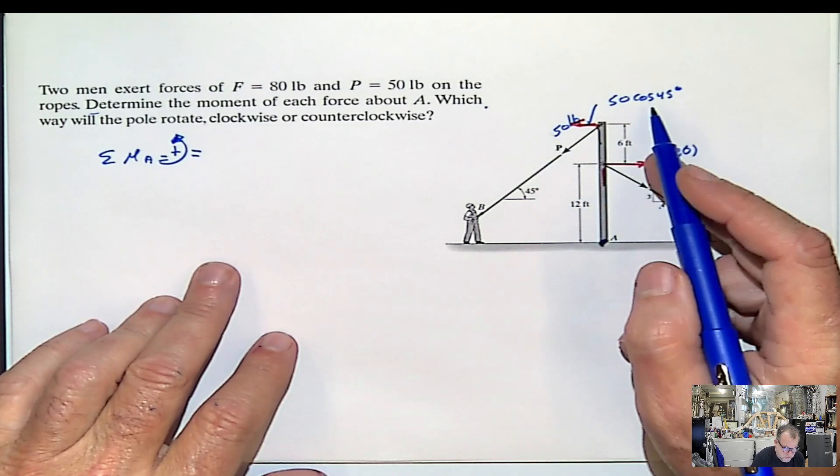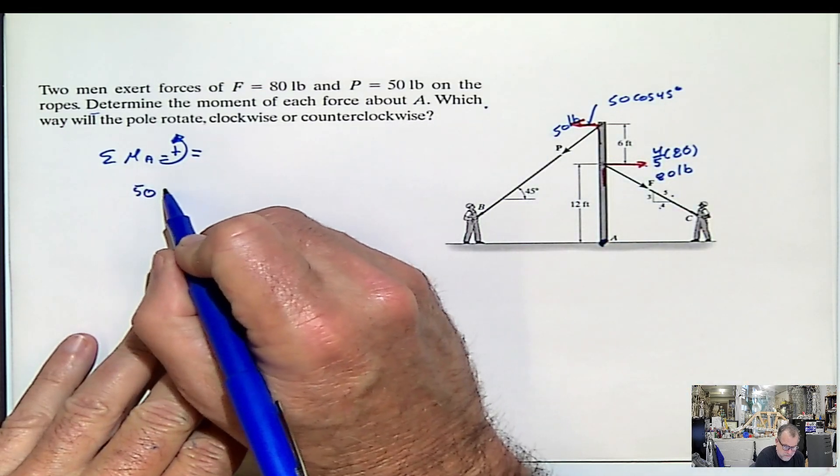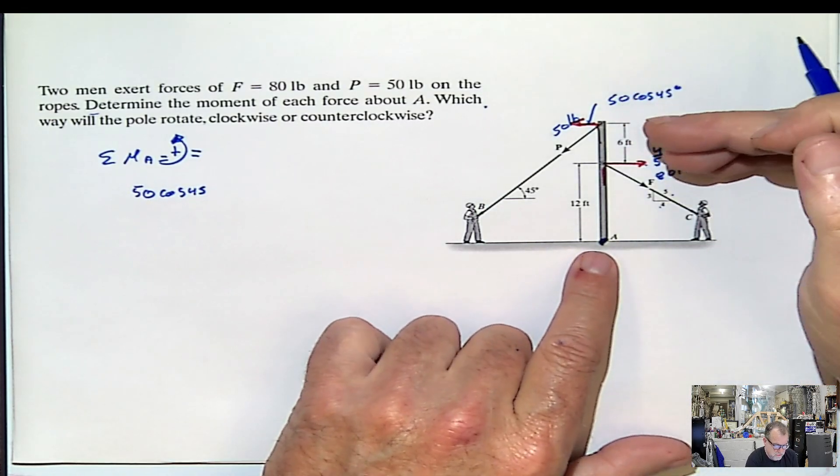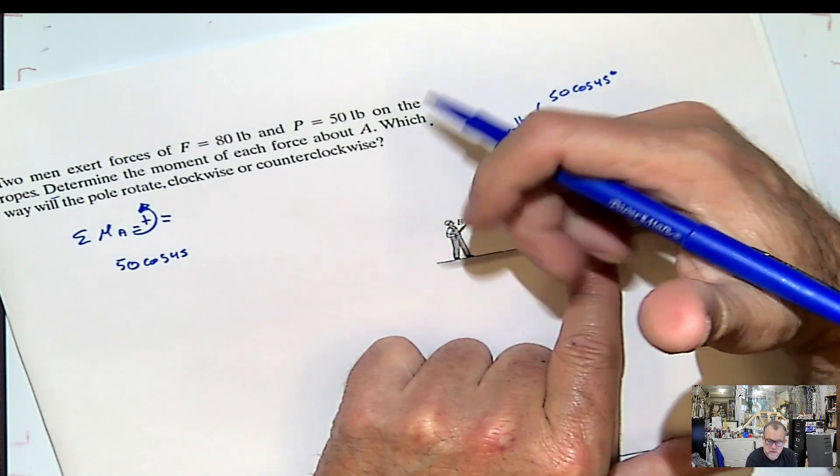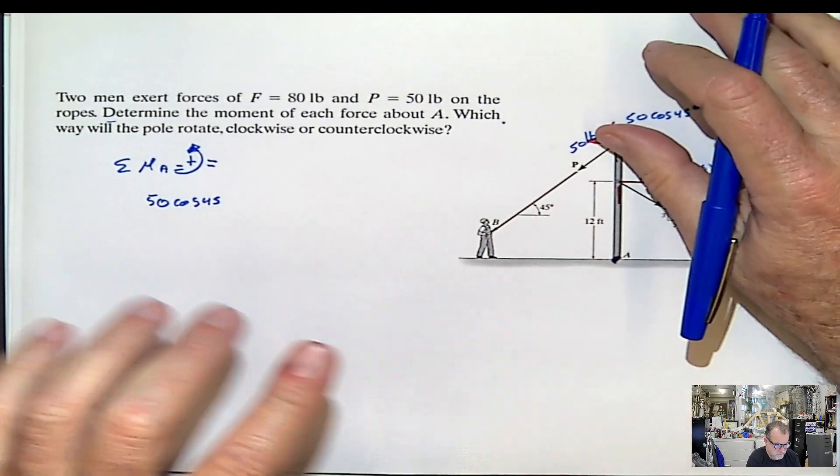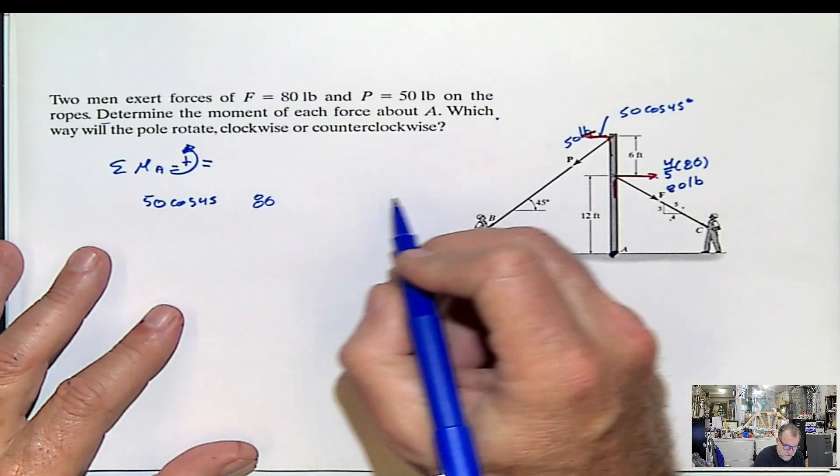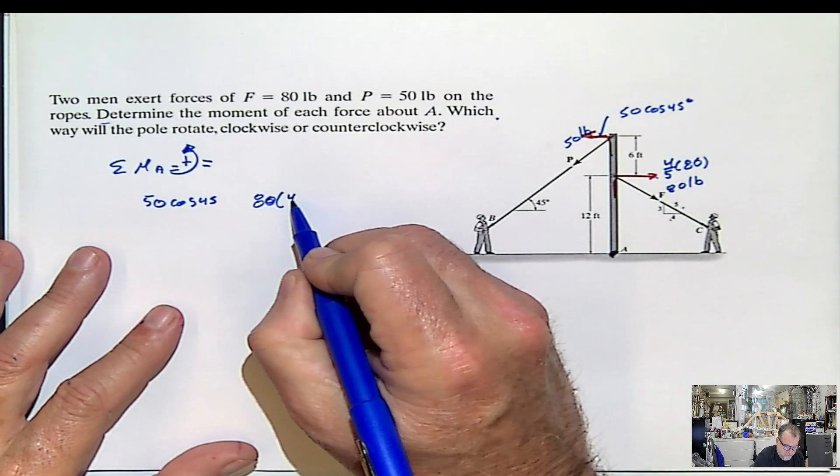So let's start. The first one, 50 cosine 45. In what direction? Rotation in this way. That means counterclockwise. That means positive. This one, 80 multiplied by 4 fifths. That's the value of the force.